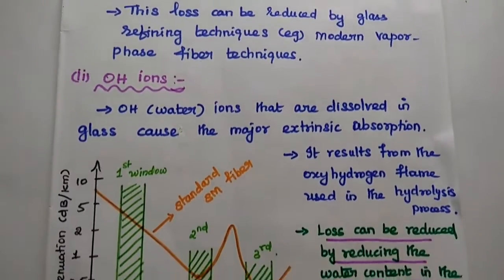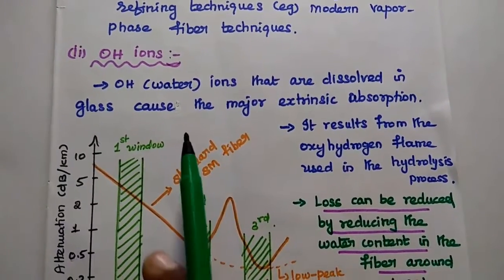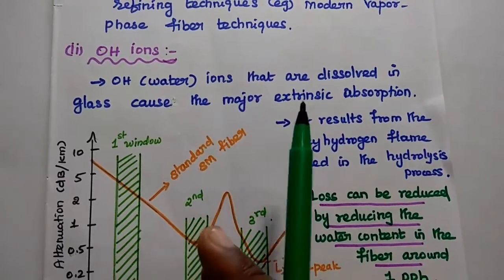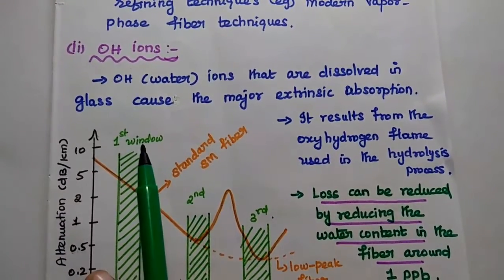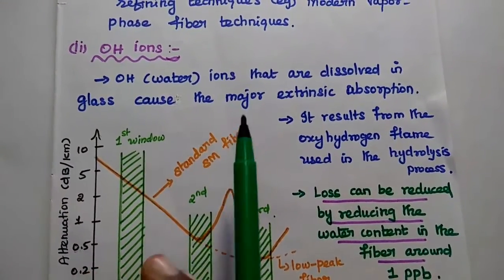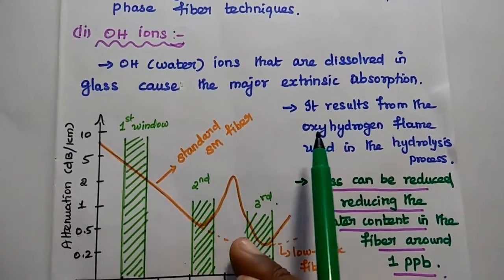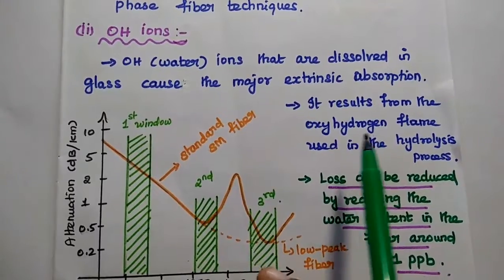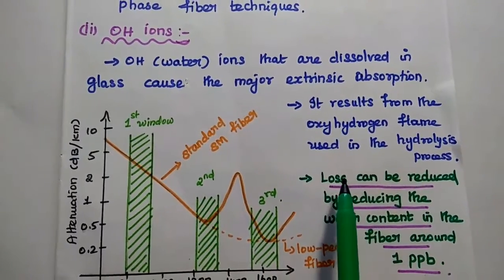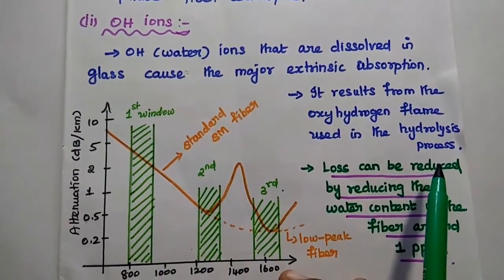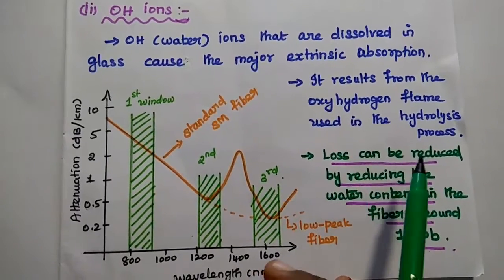The next one is OH ions. OH means water ions that are dissolved in the glass material which cause the major extrinsic absorption. This OH ions result from the oxyhydrogen flame used in the hydrolysis process during fabrication.